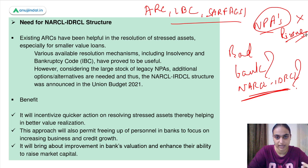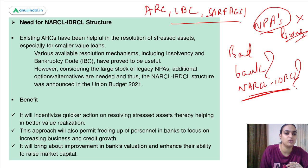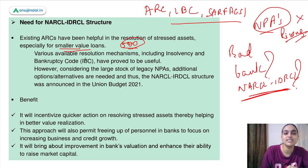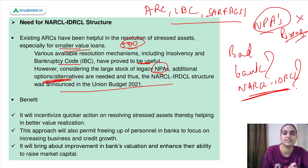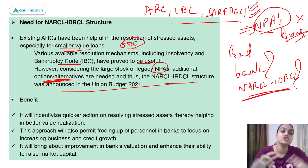The existing asset reconstruction companies usually deal in smaller-value loans and don't deal much with loans above 500 crores, because recovery is considered very difficult. Various resolution mechanisms like IBC have proved useful; however, there is still a large stock of NPAs. Additional alternatives are needed and thus this structure was suggested. The bad bank provides an alternative specifically for large-value loan recovery.